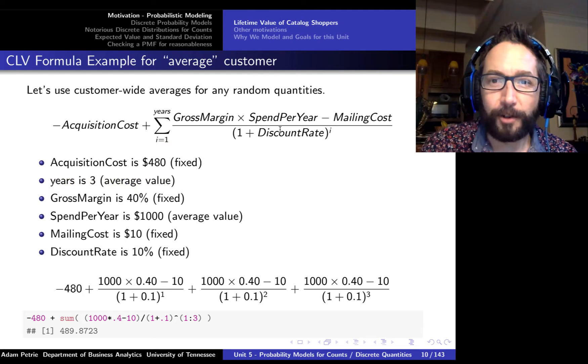Does that mean that the typical lifetime value of a customer is $490? Well, surprisingly, the answer is not necessarily. And here's going to be one of these key lessons. If we want to summarize a fairly complex random process just by working with averages, we might actually grossly underestimate or overestimate what the average value is of the final outcome of that process. There's actually a bunch of random quantities involved in this sum that we've replaced just with averages.